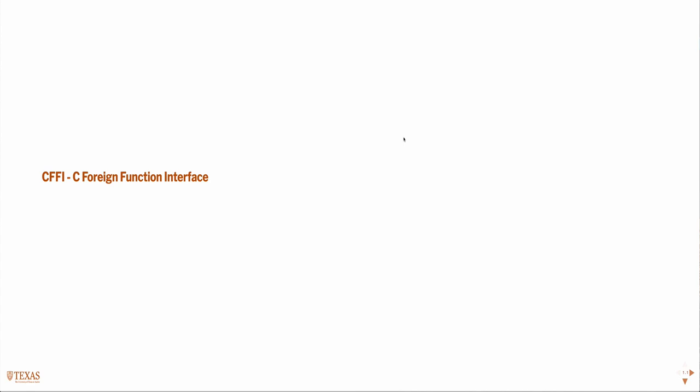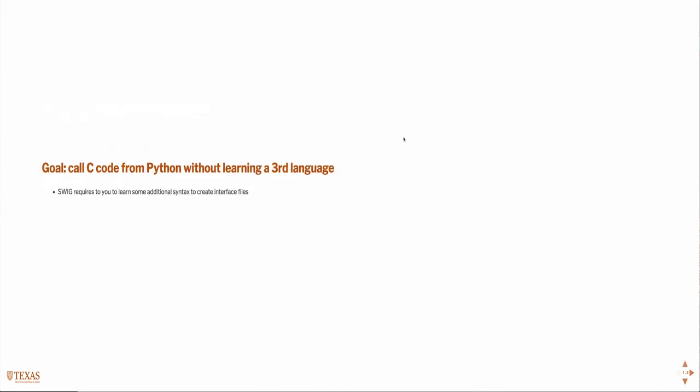This lecture is on the CFFI, or C Foreign Function Interface for Python. In some respects it serves the same purpose as SWIG — we want the ability to call compiled C code from Python. SWIG requires knowing a special syntax for interface files, so the goal of CFFI is to do this with only knowing C and Python, without any reason to learn a third language.